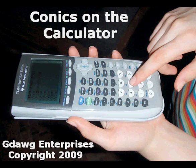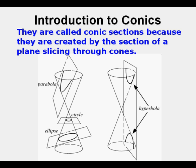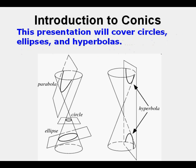Conics on the Calculator. The four types of conic sections are parabolas, ellipses, circles, and hyperbolas. They are called conic sections because they are created by a section of a plane slicing through cones. This presentation will cover circles, ellipses, and hyperbolas.